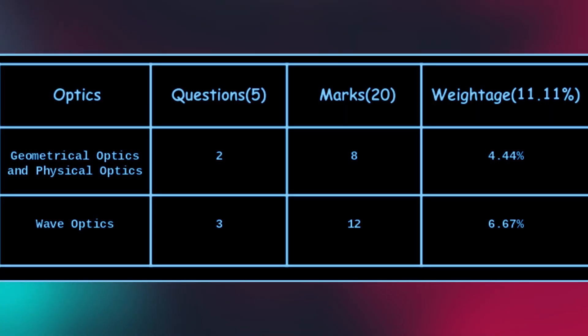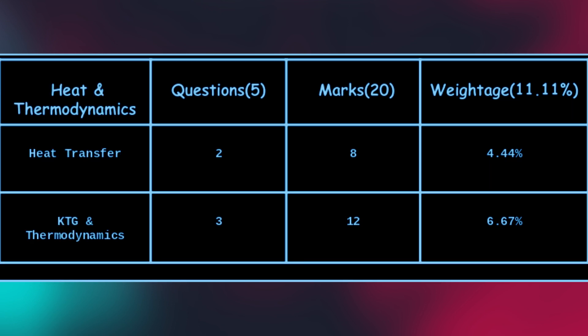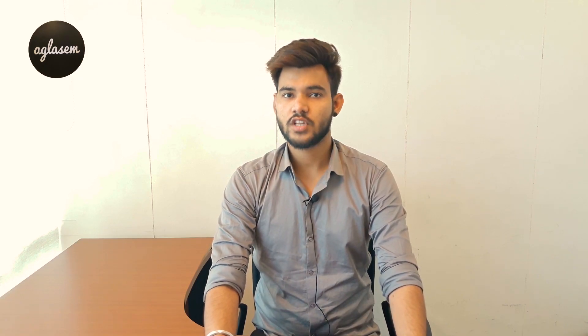Around 10 questions are from this chapter, which means around 40 marks you can cover from this unit. The next two units carry the same marks weightage. Optics contains five questions of 20 marks and a weightage of 11.11% — it has geometrical optics and physical optics: two questions of eight marks; wave optics: three questions of 12 marks. Heat and thermodynamics also has five questions of 20 marks — heat transfer: two questions of eight marks; KTG and thermodynamics: three questions of 12 marks, meaning around 20 marks are covered from this unit.